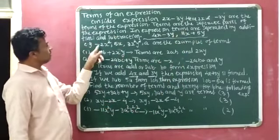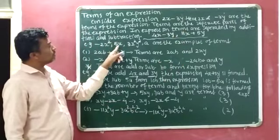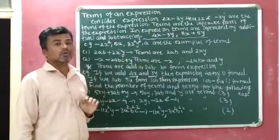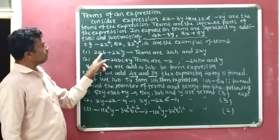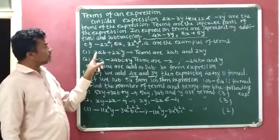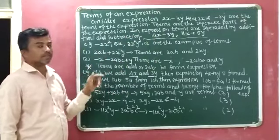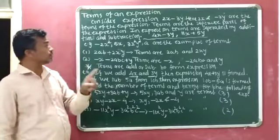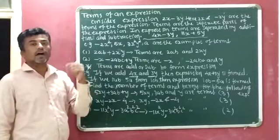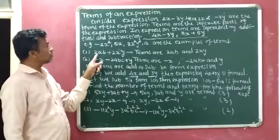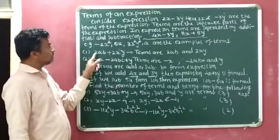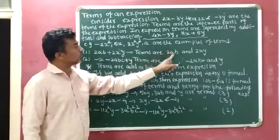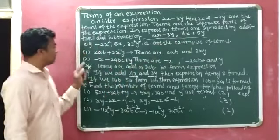Examples of terms include: minus 2x squared, 5x, 3x squared, y squared, and a. Now consider the expression 2ab plus 2xy. It is an expression with two terms: 2ab and 2xy are the terms of the expression.